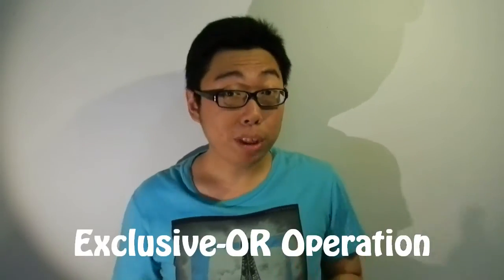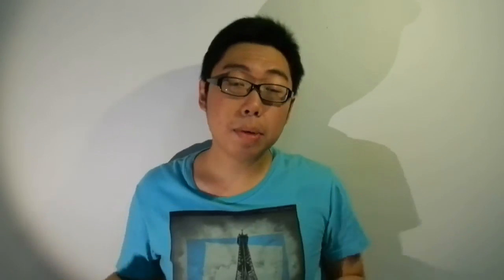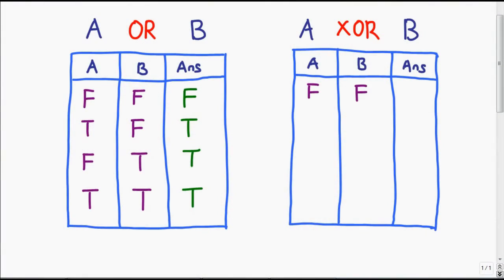Next I'm going to introduce the XOR operation, which is a little less immediately intuitive. XOR stands for exclusive OR. Instead of regular OR which accepts either one or both inputs being true, XOR is strict in that it only wants exactly one of the two inputs to be true. If you give XOR both true inputs, it will return false. So the truth table is: false false gives false, true false gives true, false true gives true, but true true gives false.